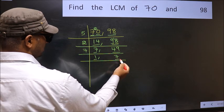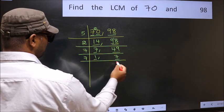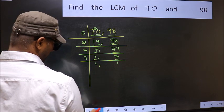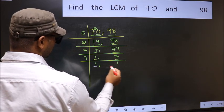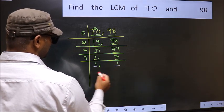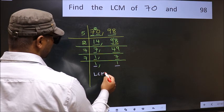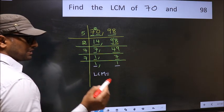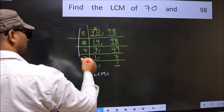7 is a prime number, so 7 once is 7. So we got 1 in both places. So our LCM is the product of these numbers.